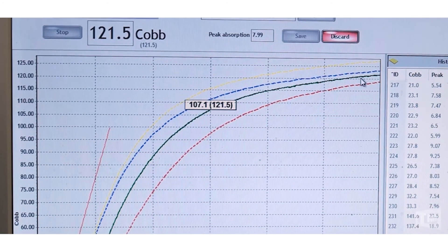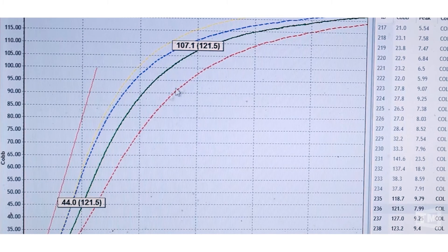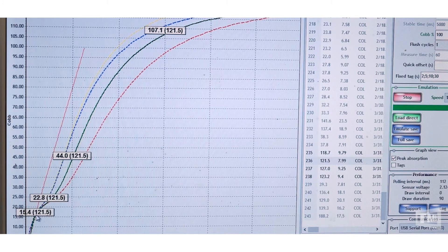We do want to see the Cobb value, but we also want to see, more importantly, how the chemicals react to the paper. In other words, this one here is absorbing a lot less than this one, as an example. So we're looking at this initially, and then we're looking at the curves, difference in curves, which is difference in chemical addition.